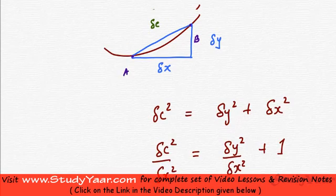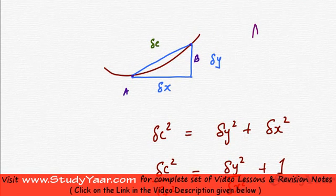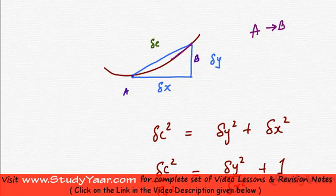Now let's see what happens as a approaches b. As a tends to b, my arc becomes shorter. If a comes closer and closer to b, the arc segment shrinks. As a tends to b, we reach a scenario where the two points are essentially coincidental, and at that point the length of the arc and the straight-line distance between the two points become the same.